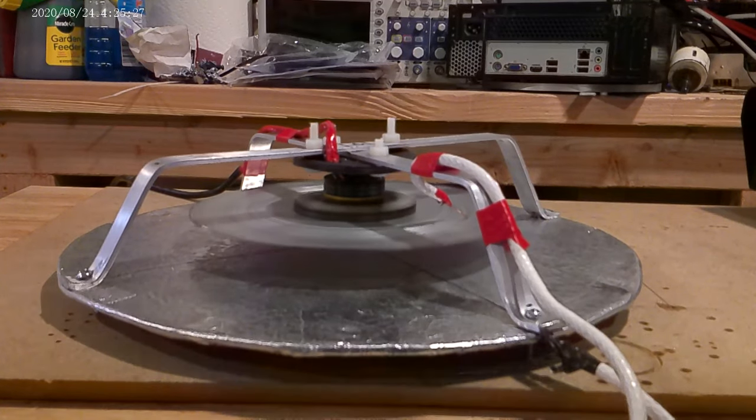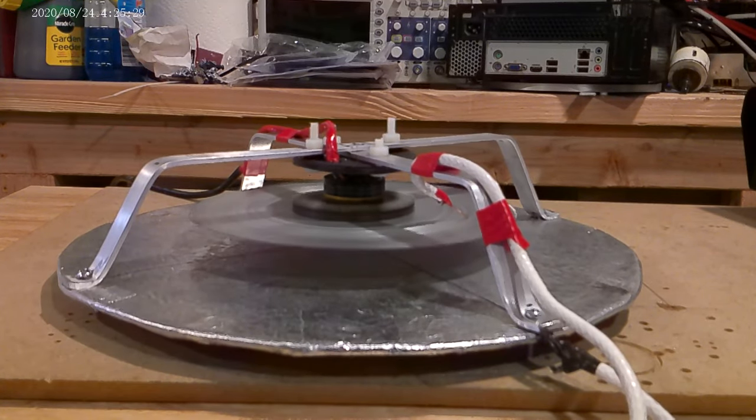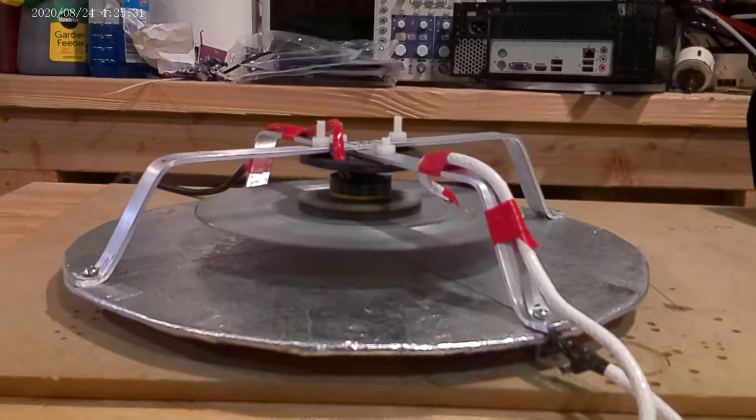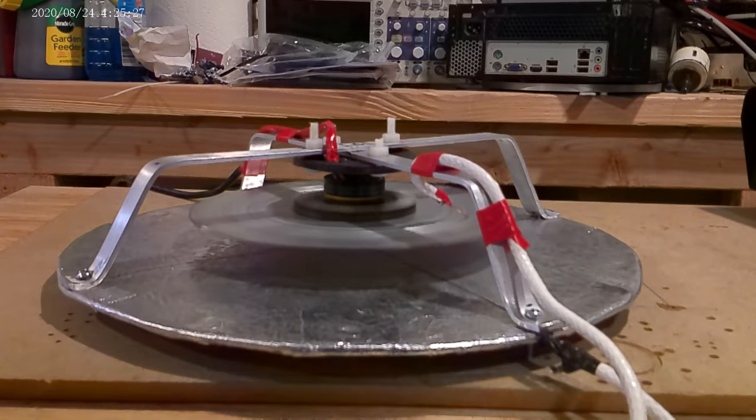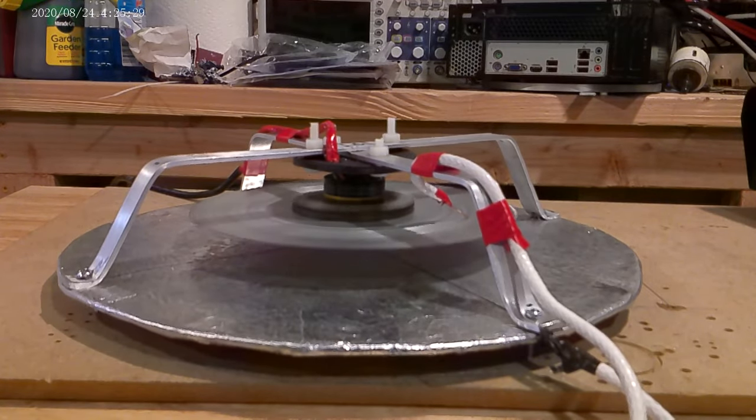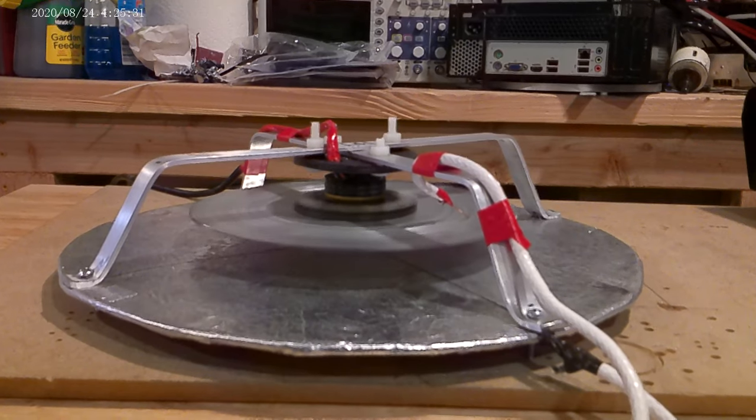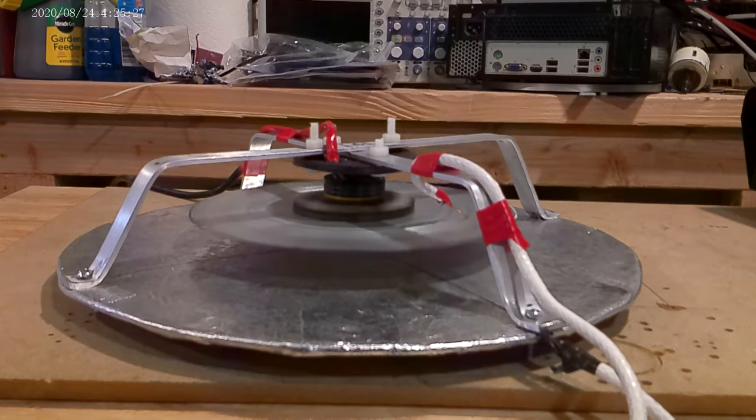This is version 2 of my GraviFlyer. I have taken off the whole bottom half of it. As you can see, the top disc is spinning. I have high voltage positive on it. The center disc is connected to high voltage negative.